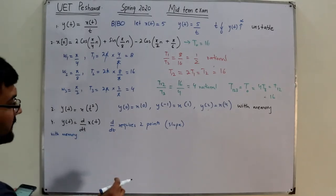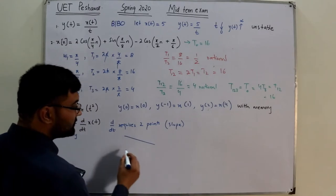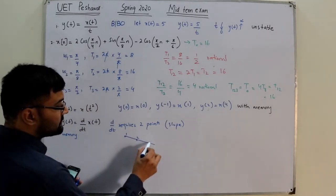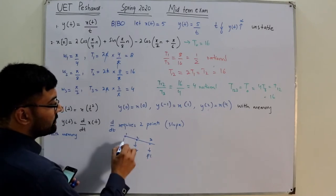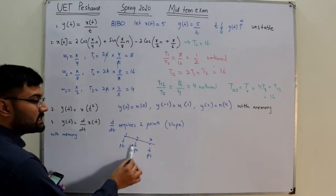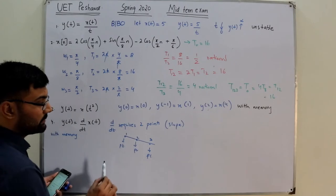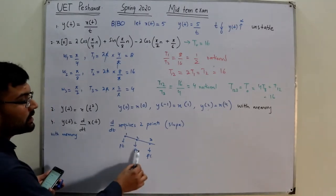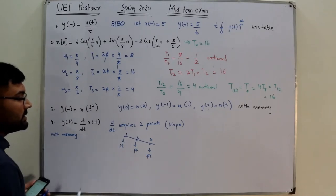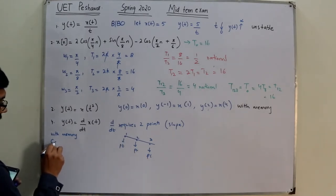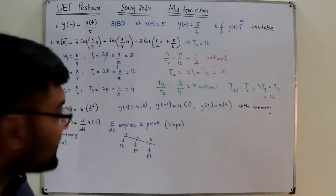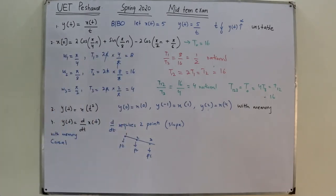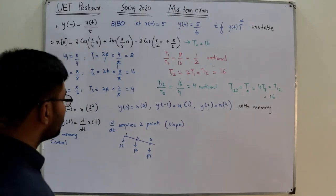For causality: the derivative still requires two points. If the present point is known, we need either the past or future point to find the slope. Practically, we use the past point and do not consider future points, so this is a causal system.